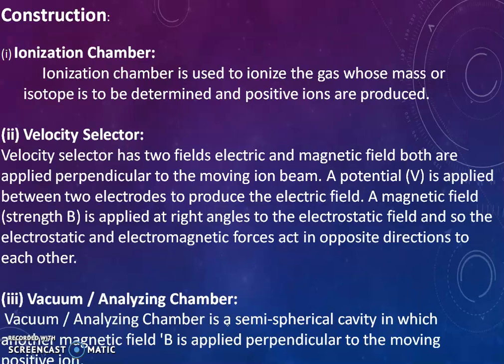Now the construction of Bainbridge mass spectrograph. It mainly consists of three important parts. Firstly, the ionization chamber. Secondly, velocity selector circuit. And third, vacuum analyzing chamber.